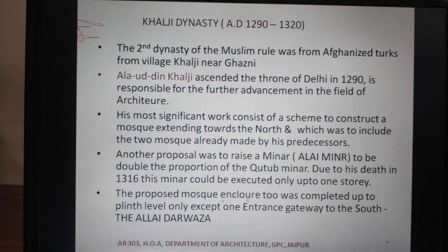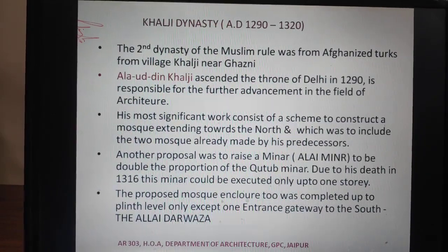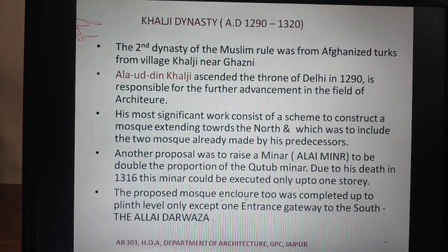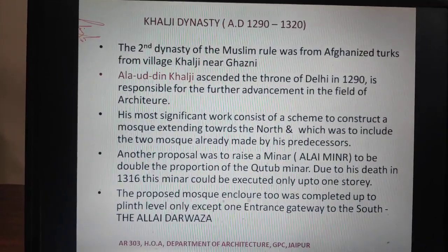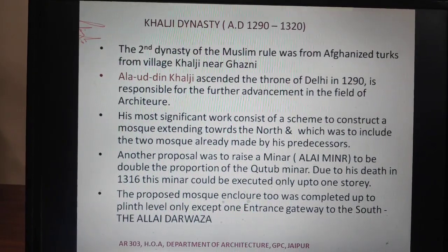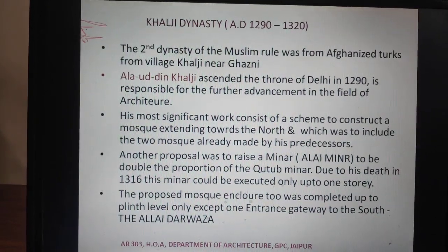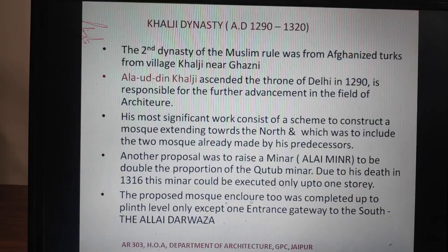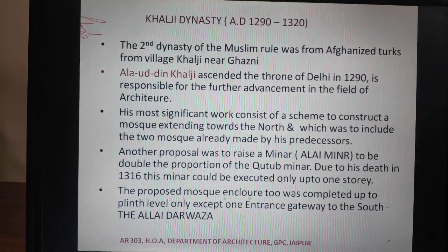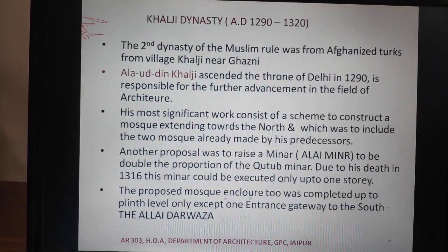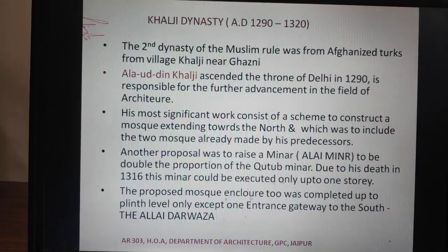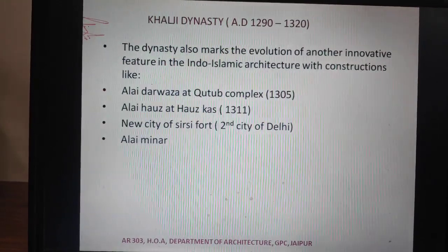Alauddin Khalji took the throne of Delhi in 1290 AD. We will explain the second mosque and the whole enclosure of the mosque, which is the second mosque. I will explain it in the next figure.